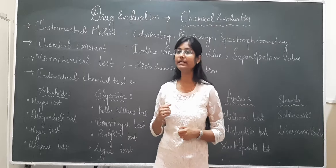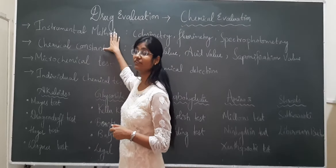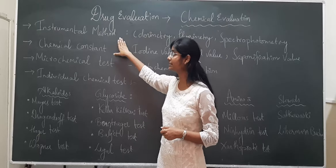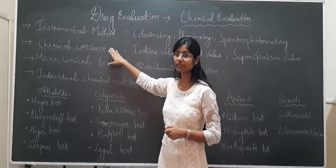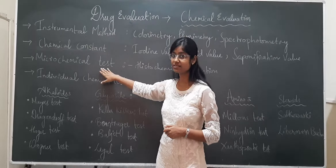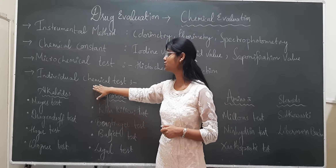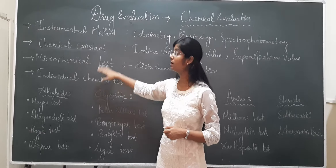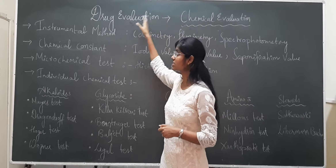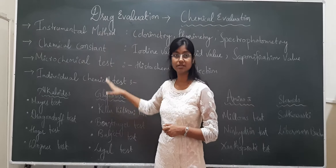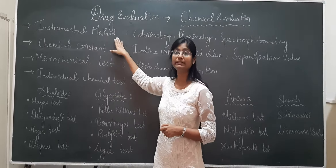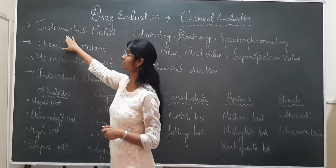If we look at this overall, we have four methods of chemical evaluation: instrumental method, chemical constants, microchemical test, and individual chemical test. So this is your category of chemical evaluation — it has four points.